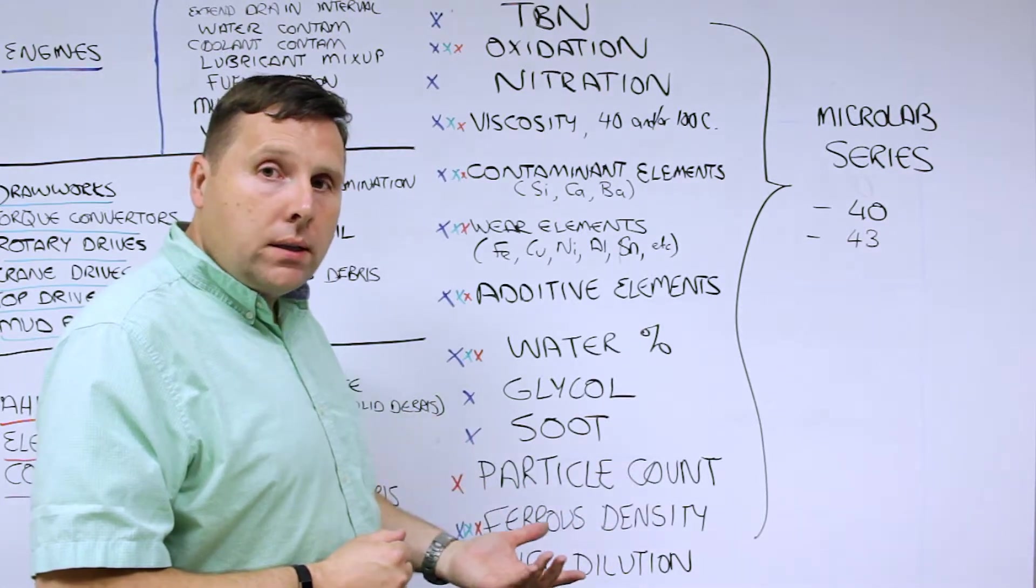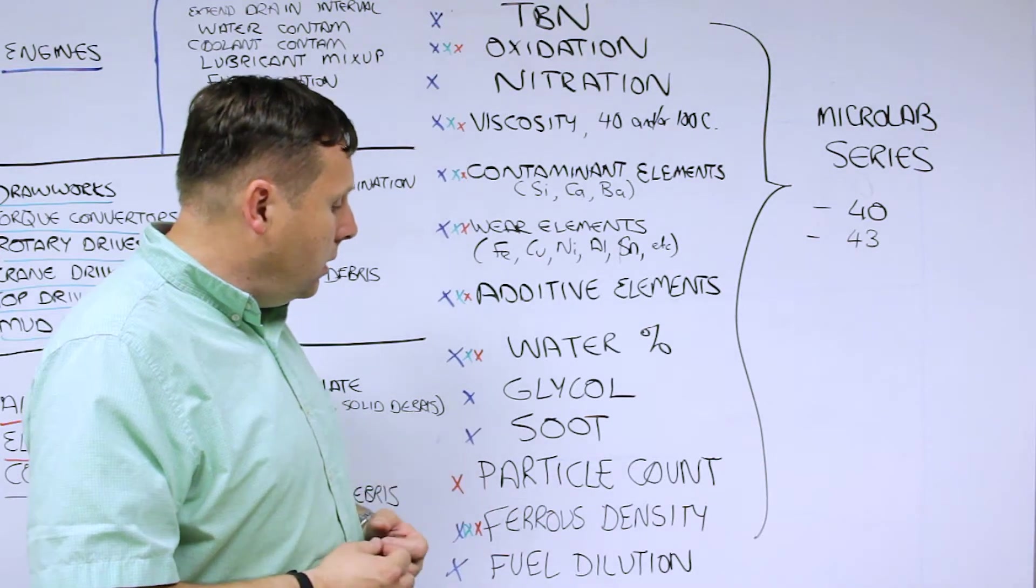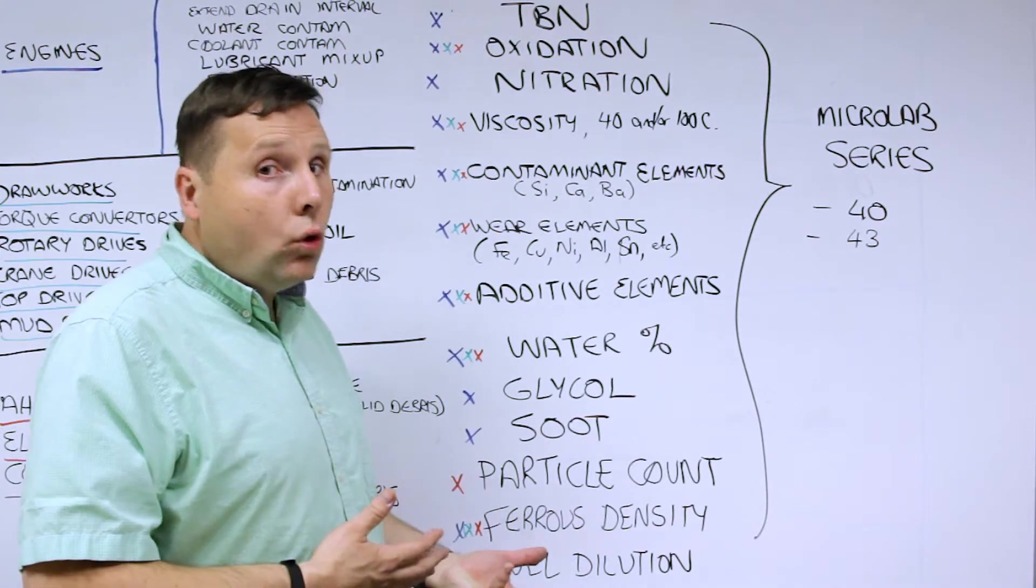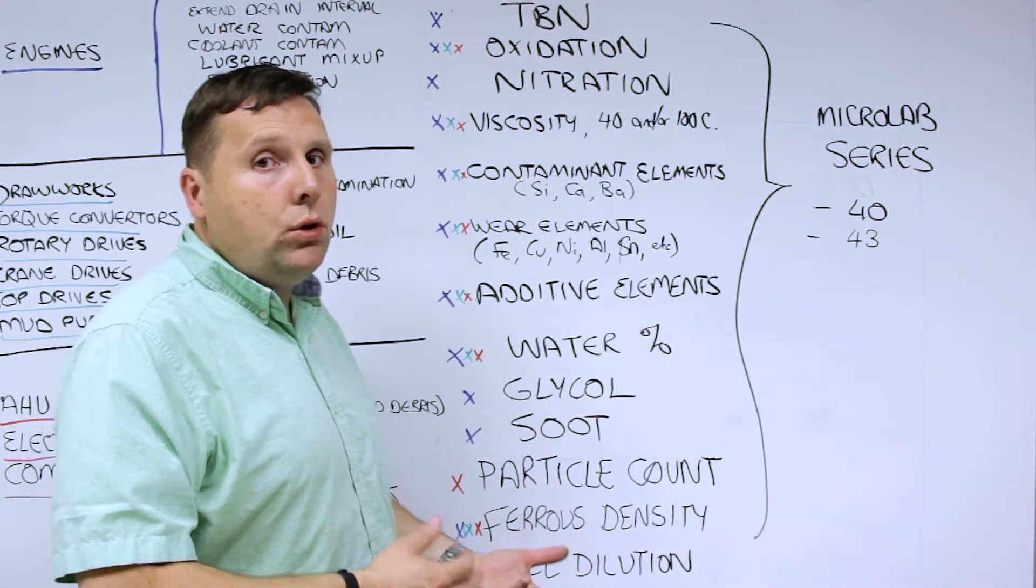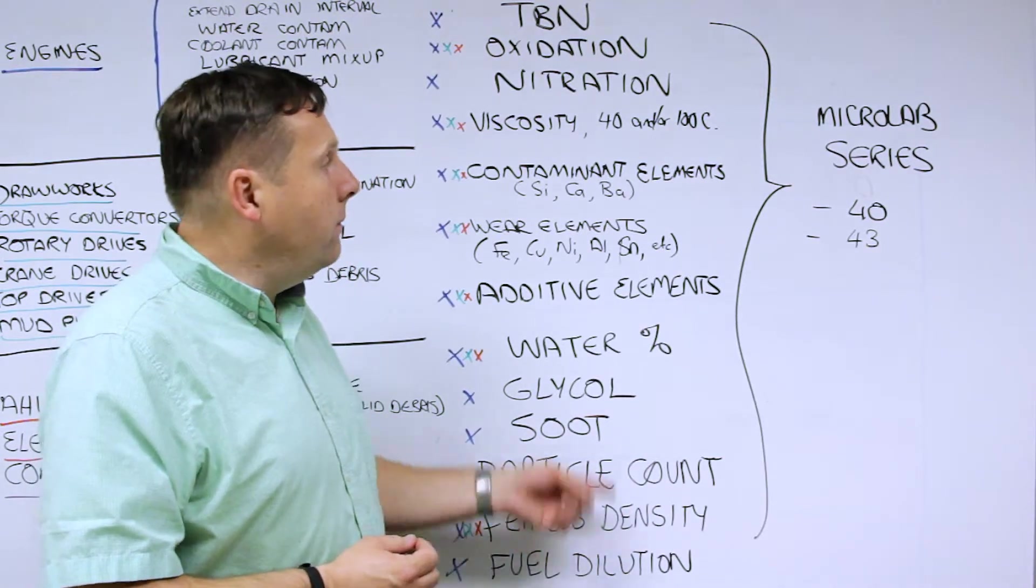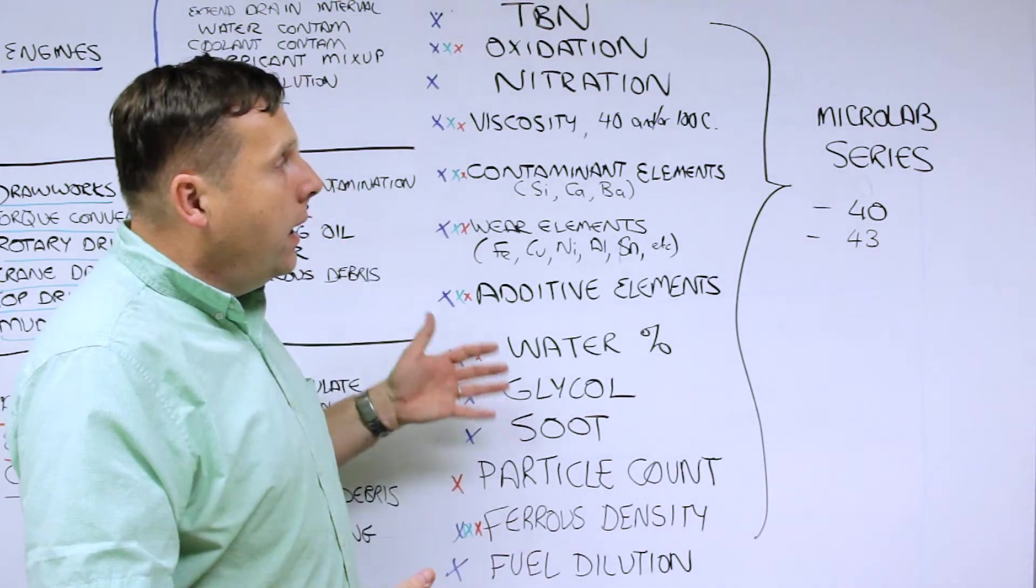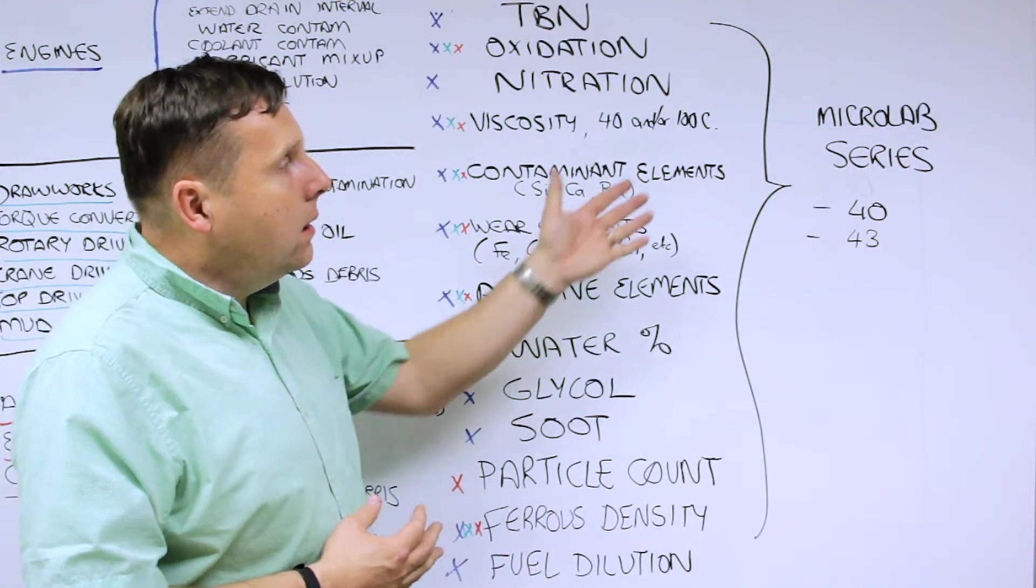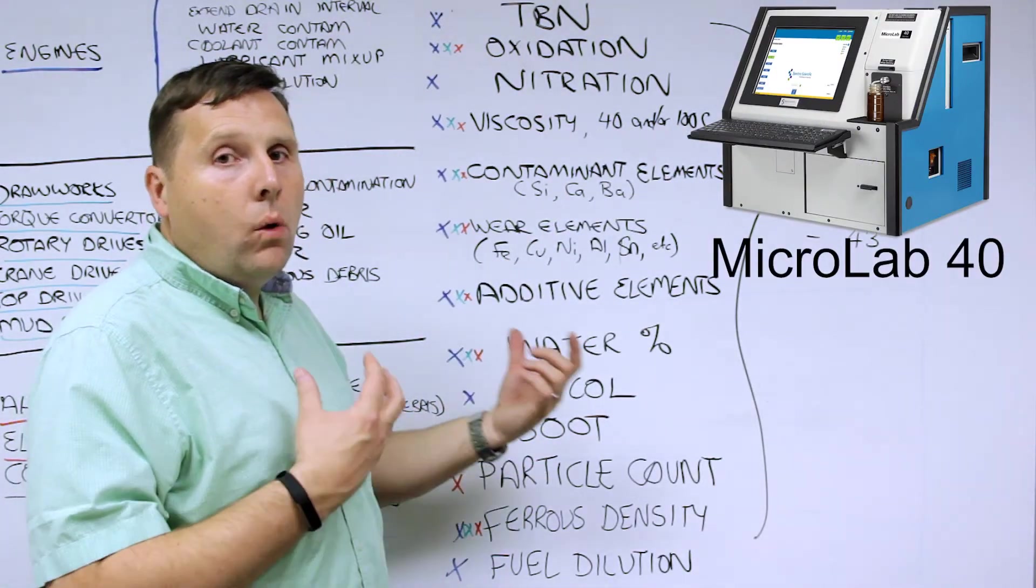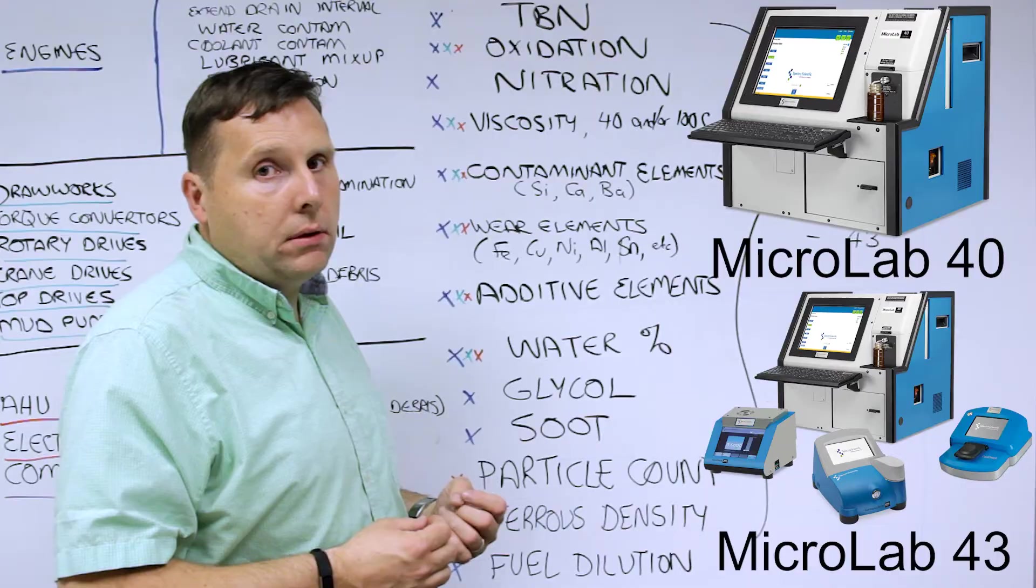Likewise, particle count for hydraulic systems and certain gearbox applications gives you indication of cleanliness issues, also for compressors. Ferrous density we strongly recommend for rotating equipment because it can indicate when you have normal wear occurring, so it's the first sign of severe wear coming down the line. And then fuel dilution to validate what's going on if you see a drop in viscosity. With all of these tests, they are well handled by our Microlab series. There's different versions - the base model is the 40. We certainly recommend for these applications the 43, where you can incorporate some of the other products in there as well.